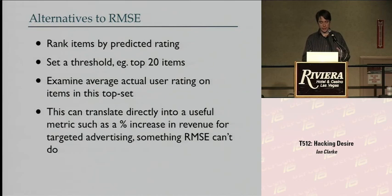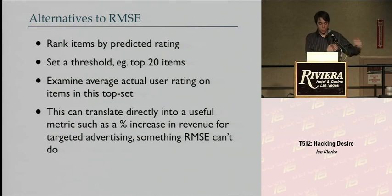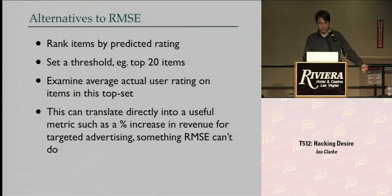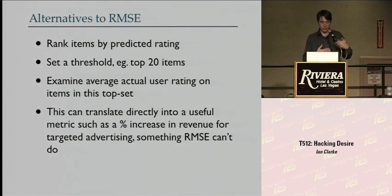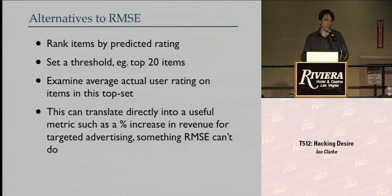The simplest alternative I've come up with models how you actually use these algorithms. You rank items by predicted rating for a given user, set a threshold at the top 20, and look at whether any of those items are in your probe set. You then look at the average actual rating of items that find their way into that top 20. That is a metric you can translate directly into a percentage increase in revenue — useful when talking to advertisers.